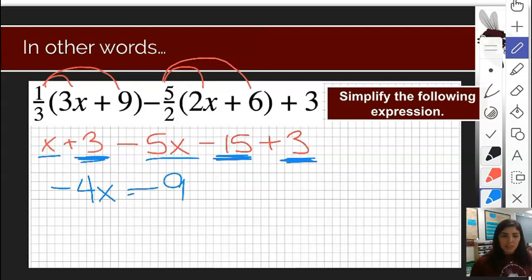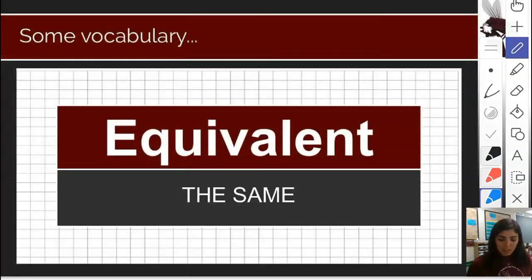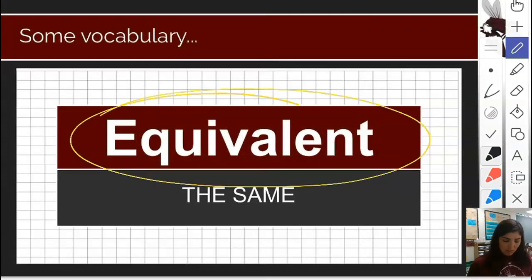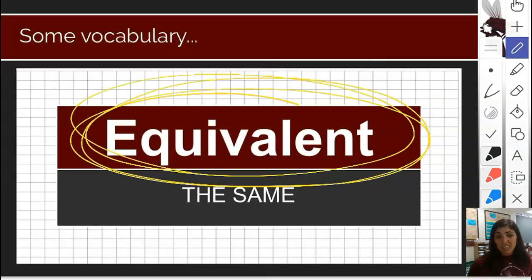Since there's nothing else I can do to simplify this expression together, that's actually where I'm going to stop. That's a simplified form of this expression. It's not solved because there's no equal sign. It's just simplified. Now something you're going to see a lot in these types of questions is the word equivalent. Equivalent is a huge indicator that we're going to be doing this type of problem where we're just simplifying it down.